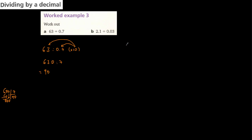Here we have 2.1 divided by 0.03. To get rid of the decimal point in 0.03, I need to move two units to the right, which means multiplying by 100. So it becomes 210 divided by 3. Since 21 divided by 3 equals 7, the answer is 70.